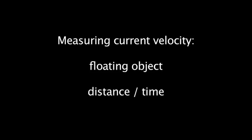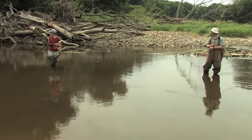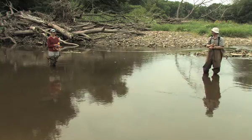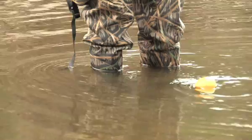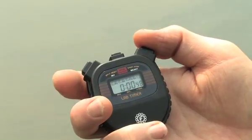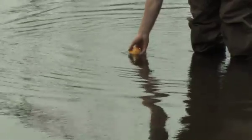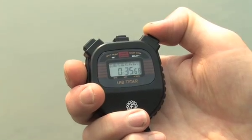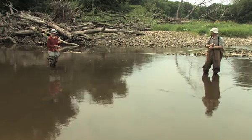To measure current velocity in pools or other areas of the river where there are no obstructions, we can simply measure the time required for an object to float a given distance. For example, we can measure the time required for an orange to float 5 meters. Use a stopwatch to measure the time required for the orange to float the known distance, then calculate the velocity in meters per second by dividing the distance by the elapsed time.